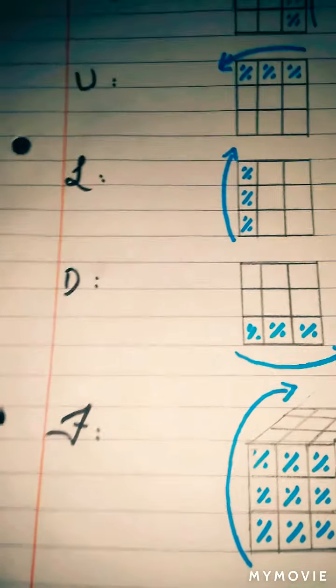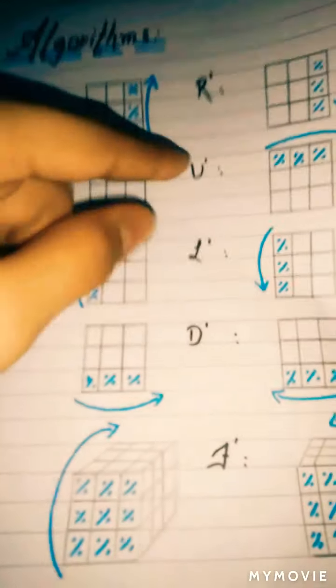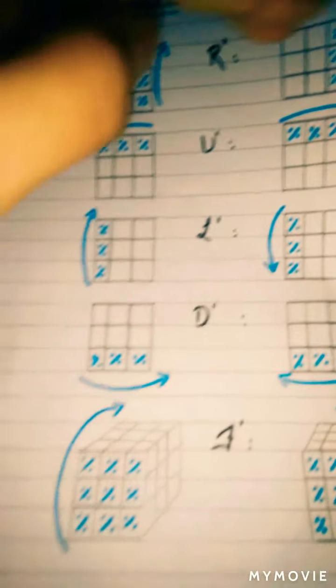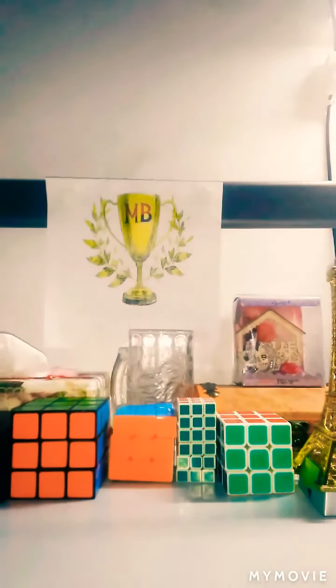The next one is U. U means the up layer — the up layer moves to the left. Now U prime is the up layer moving to the right.